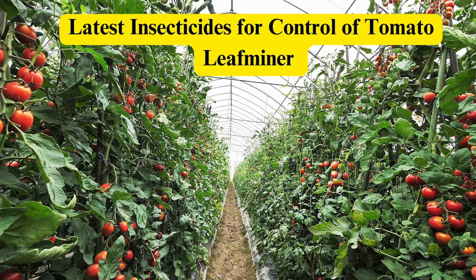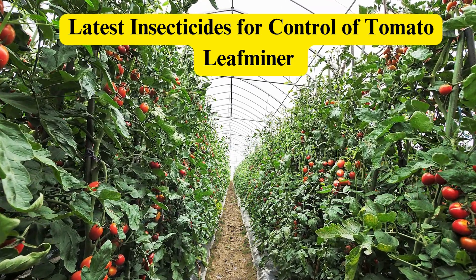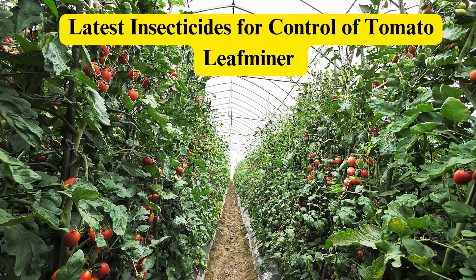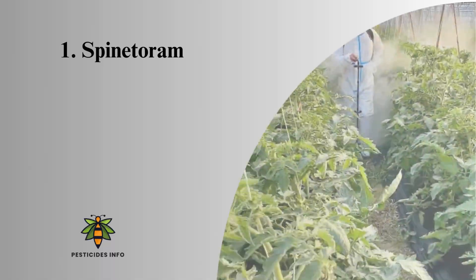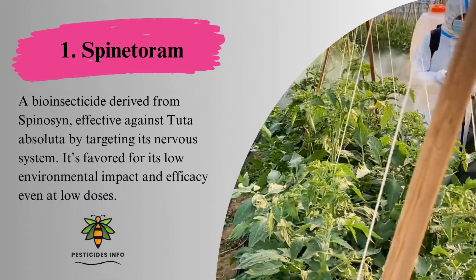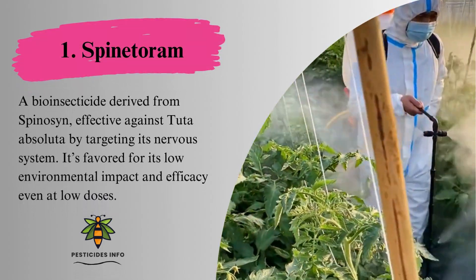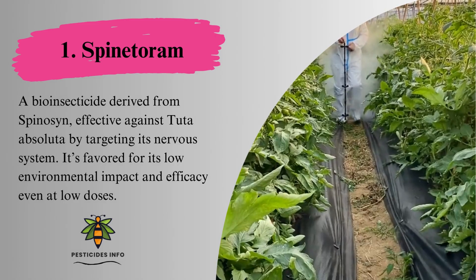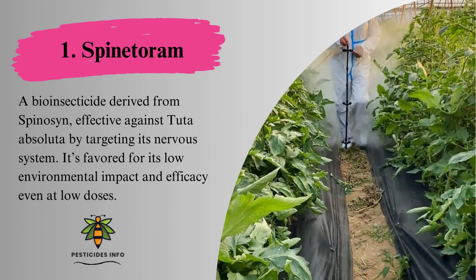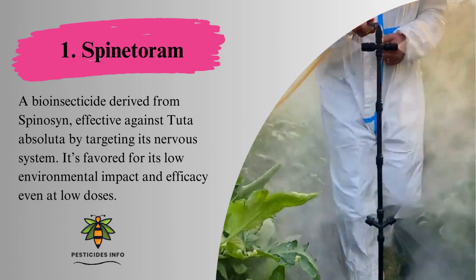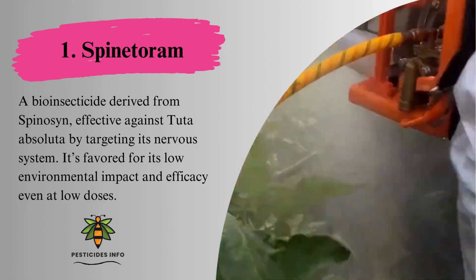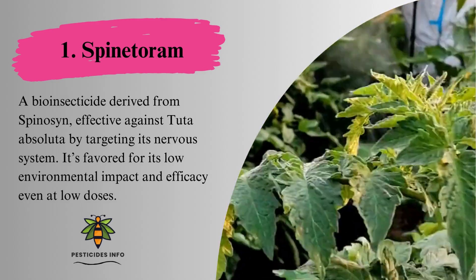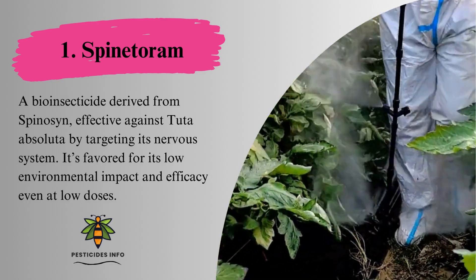Latest insecticides for control of tomato leaf miner, Tuta absoluta. 1. Spinotoram, a bioinsecticide derived from spinosyn. Effective against Tuta absoluta by targeting its nervous system. It's favored for its low environmental impact and efficacy, even at low doses.